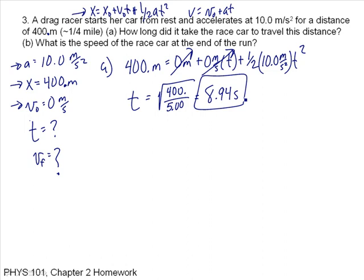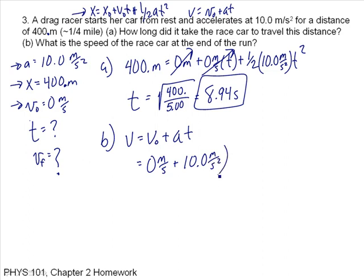The total time for the race is almost 9 seconds. For the final speed: V equals V-naught plus AT, which equals 0 plus 10 times 8.94 seconds, giving 89.4 meters per second. That's approximately 200 miles an hour.